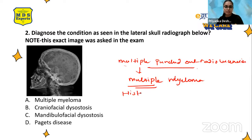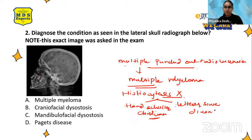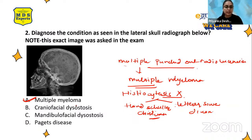The three conditions showing punched-out radiolucencies are: first, multiple myeloma; second, histiocytosis X — with subtypes Hand-Schüller-Christian disease and Letterer-Siwe disease. Among the given options — craniofacial dysostosis, mandibulofacial dysostosis, Paget's disease, and multiple myeloma — the correct answer is multiple myeloma. The other options are not associated with punched-out radiolucencies.